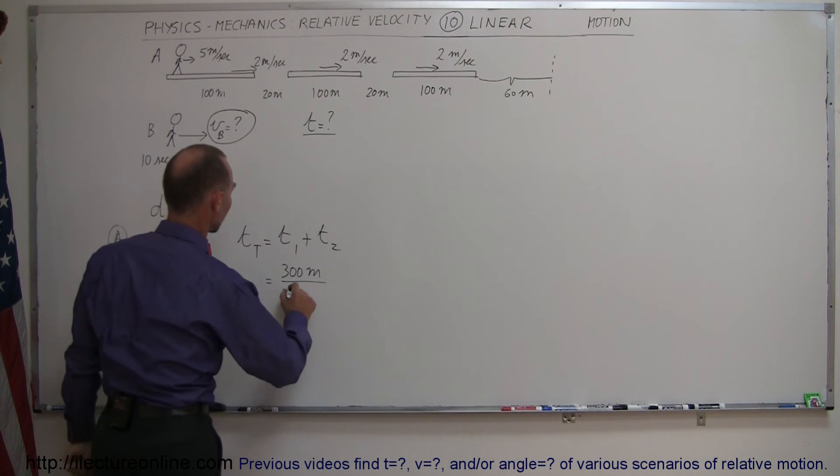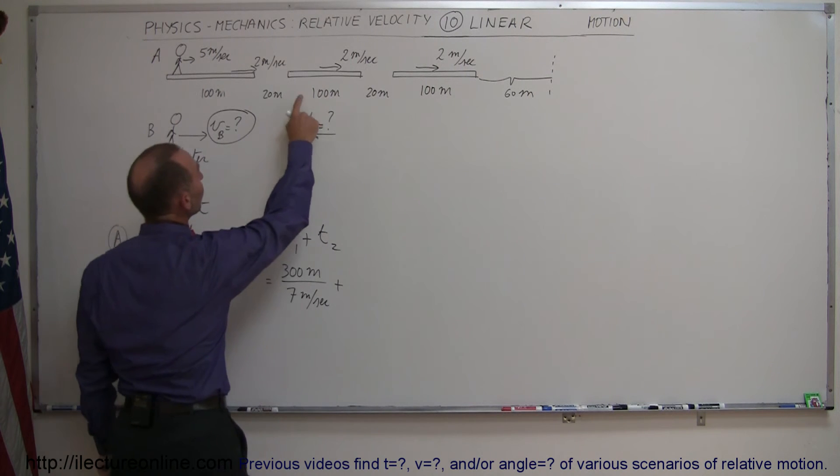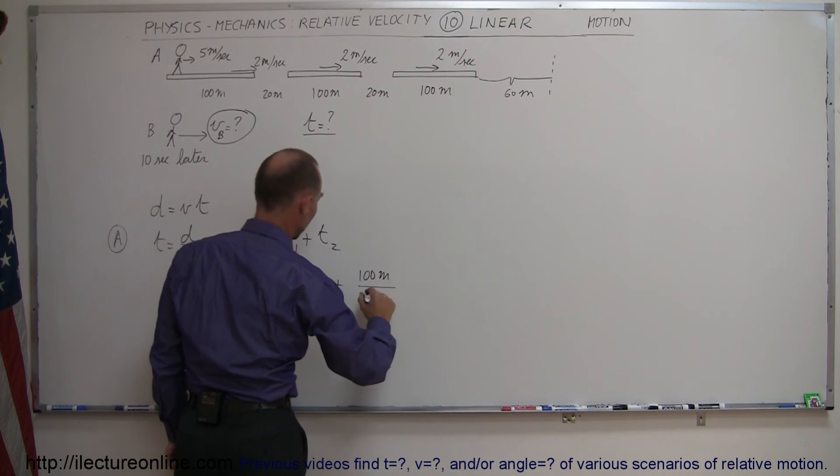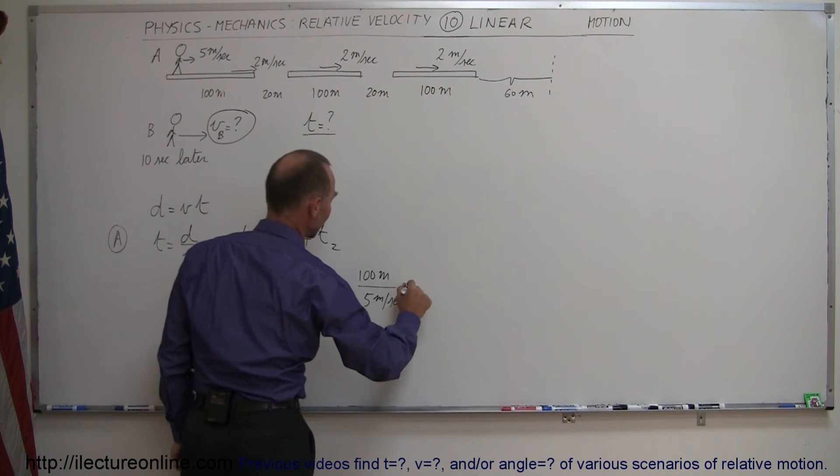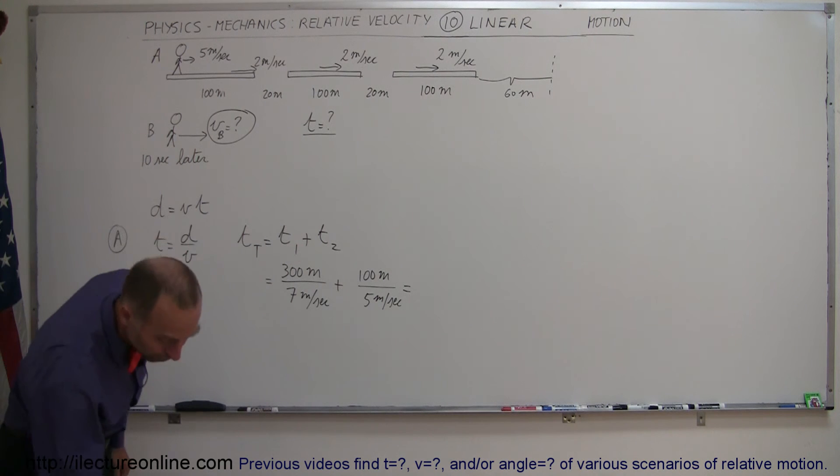Time is distance over velocity, so this is equal to 300 meters of conveyor belt divided by a velocity of 5 plus 2, or 7 meters per second. Plus he has an additional 20, 40, or 100 meters to travel and he'll do that at the speed of 5 meters per second, and that will give you the total time that passenger A will take to get to the boarding area.